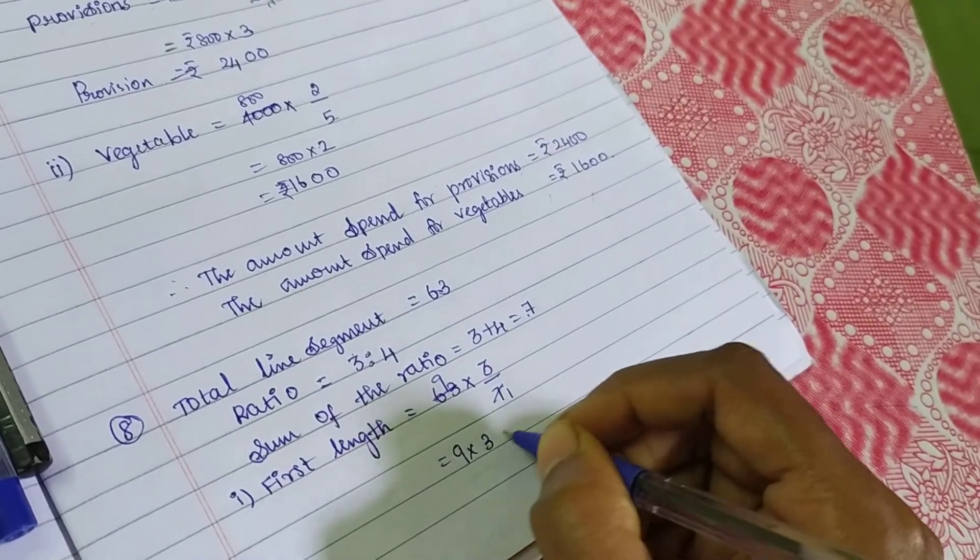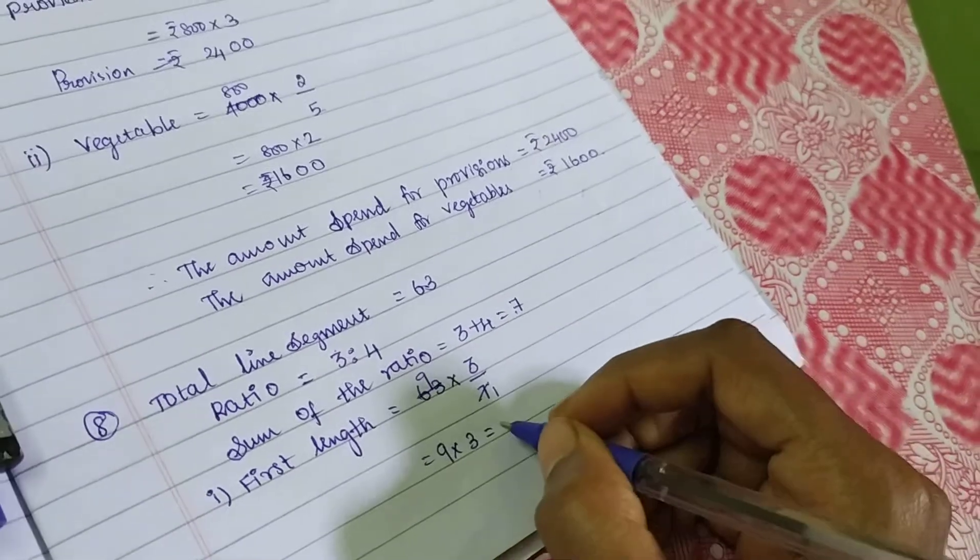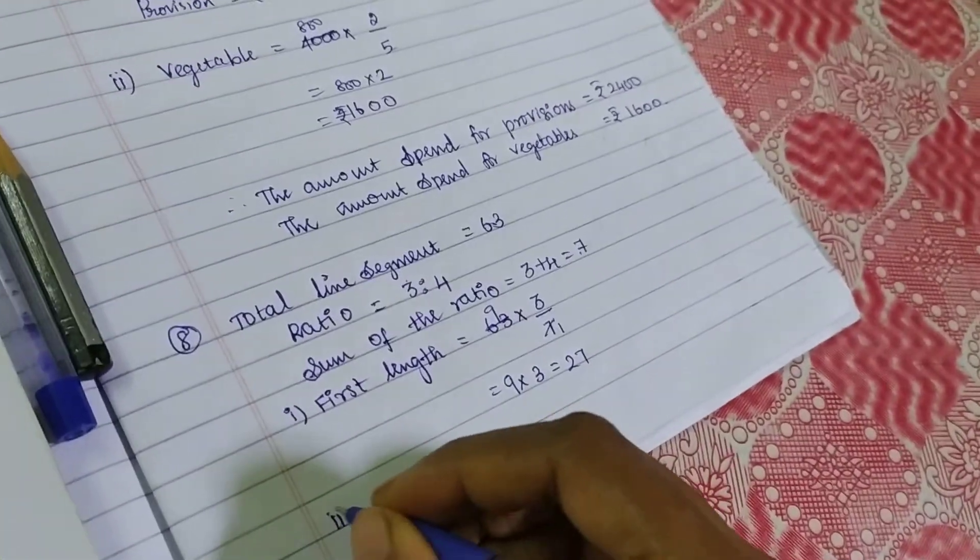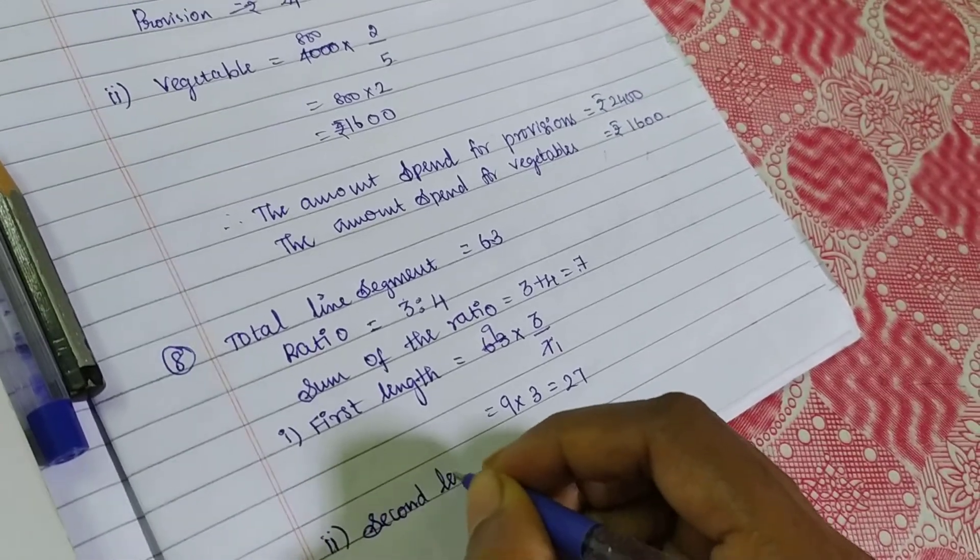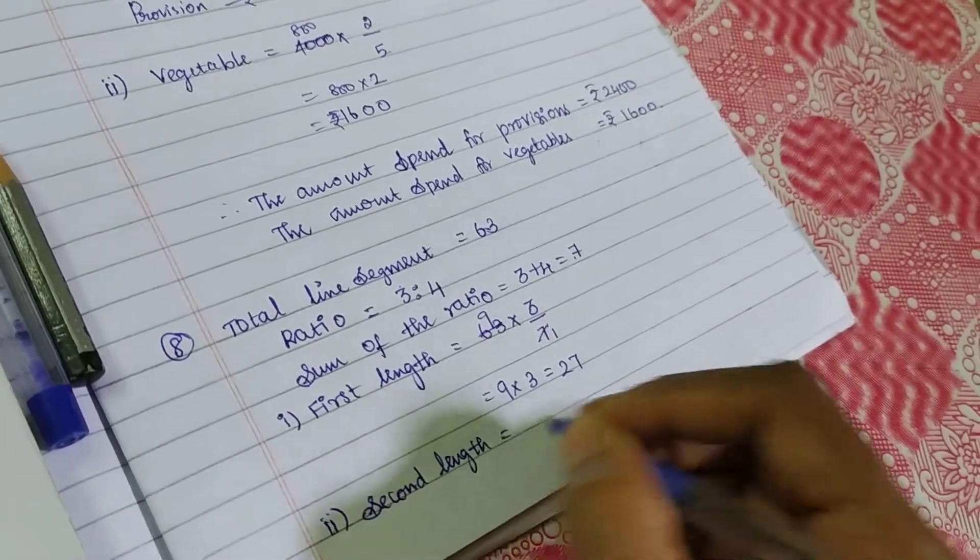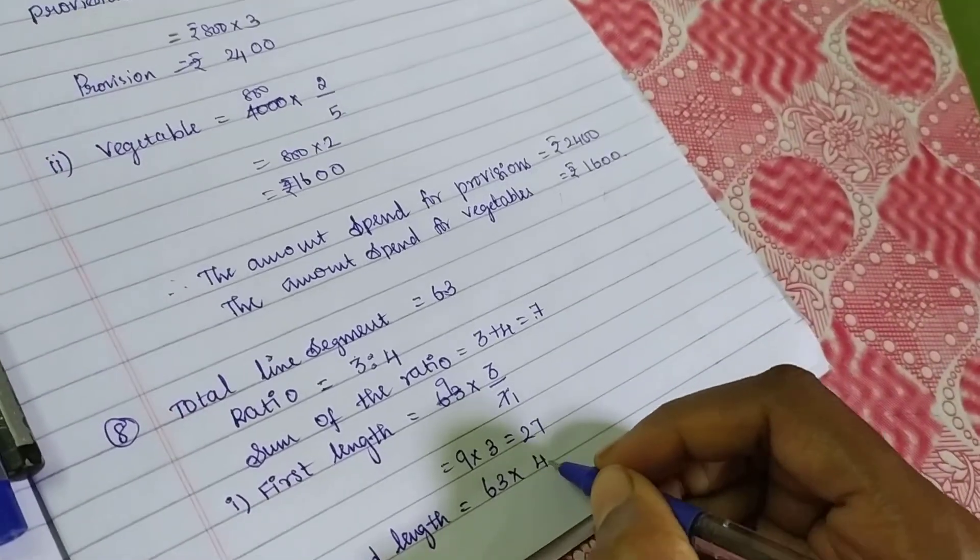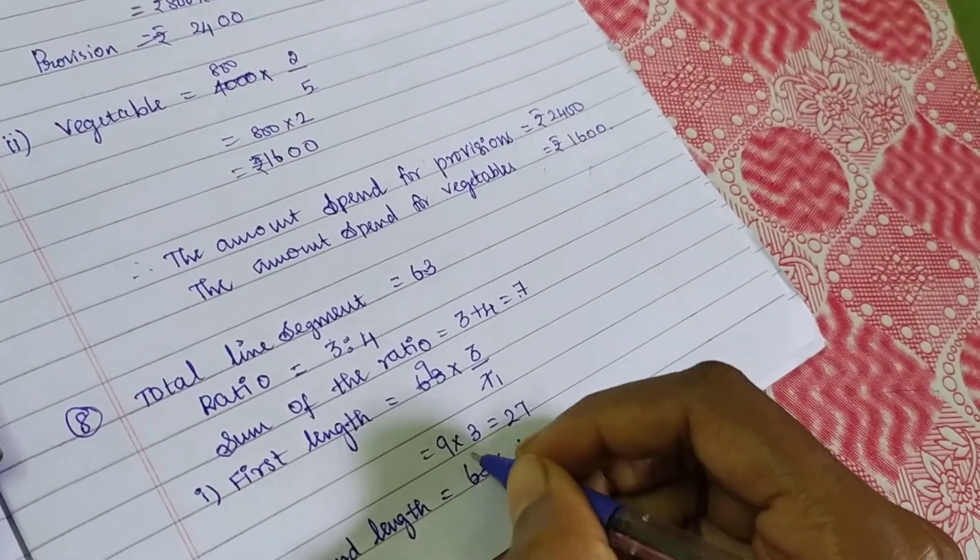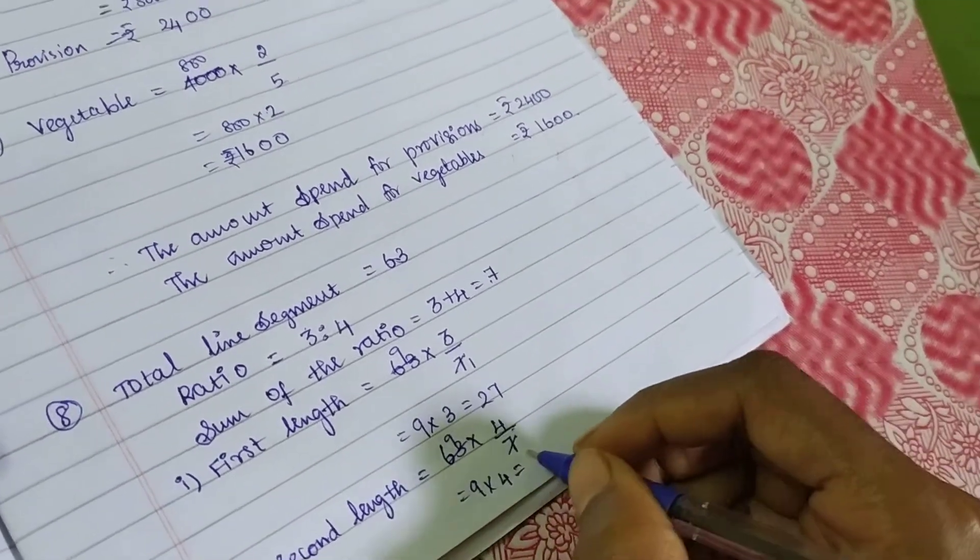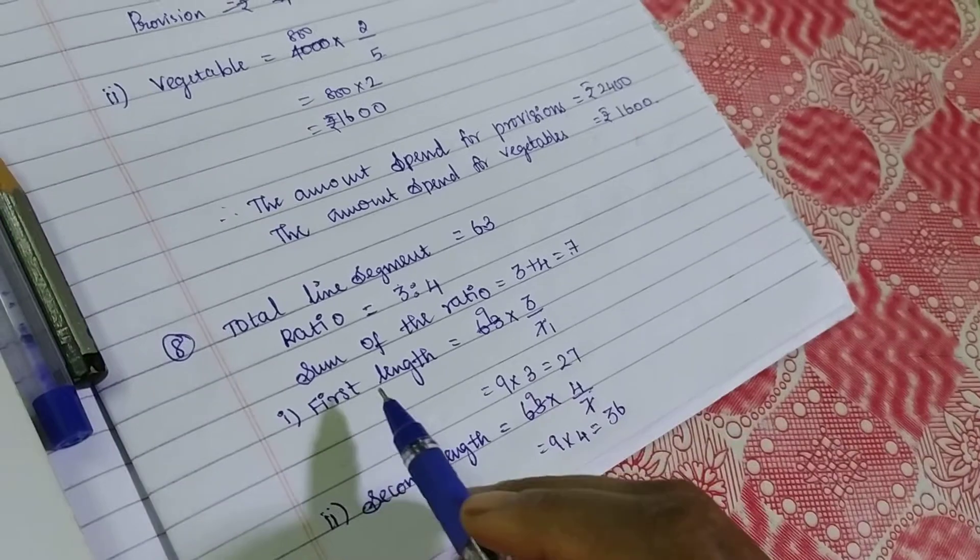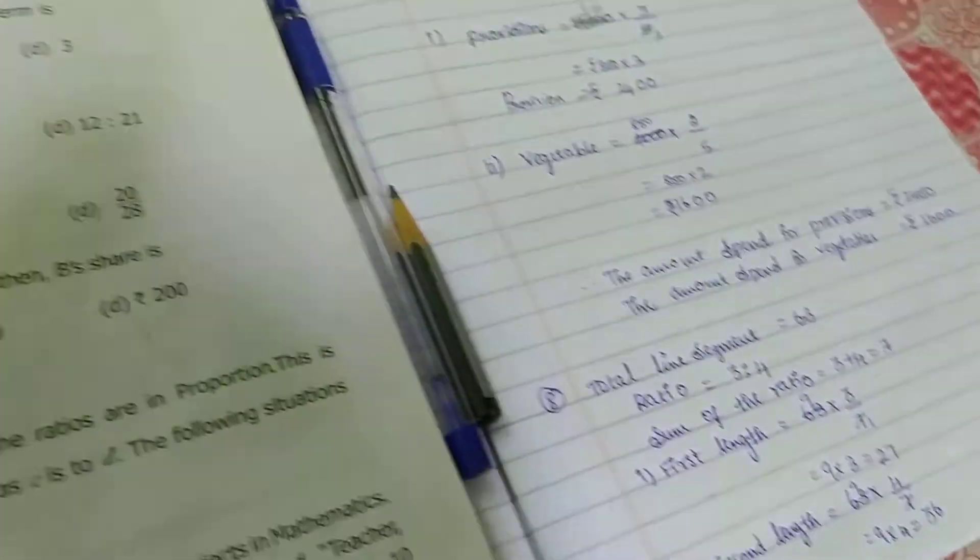9 threes are 27. Second length: 63 into second ratio is 4, 4 by total 7. So again 9. 9 fours are 36. That's it. Therefore, first length is 27, second length is 36. That's only the answer.